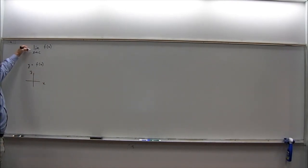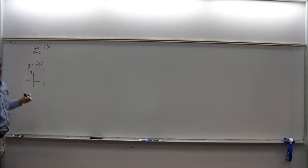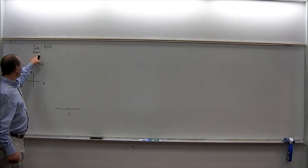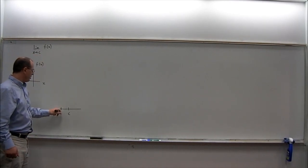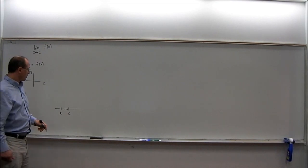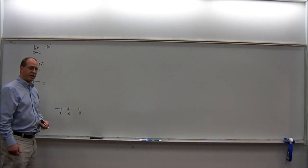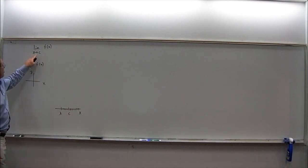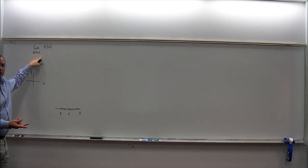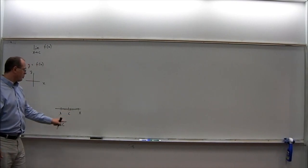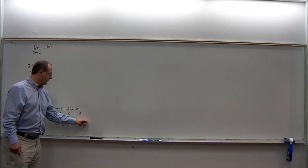First, let's talk a little bit about this expression. x, the input variable, is approaching c. So on the number line, if we draw the number c, then x is approaching c — maybe x is here, getting closer and closer to c without ever reaching it. Alternatively, x could approach c from the other side. So when we say x approaches c, there are really two different possibilities: x can approach c from the left side, or x can approach c from the right side.